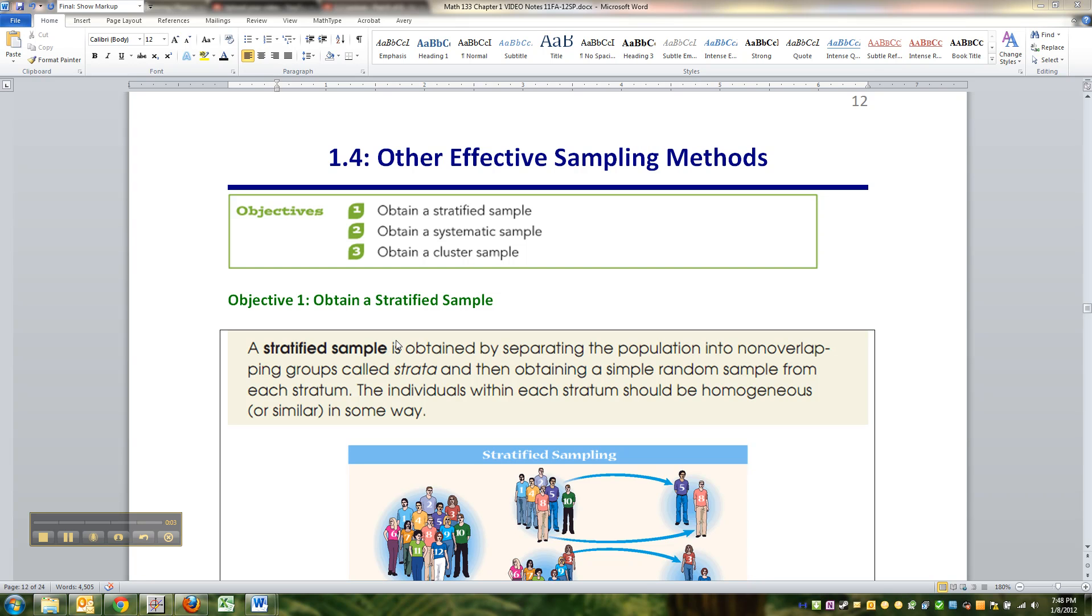So now we move into 1.4, which is the other types of sampling that are available. Simple random sampling is kind of a basic building block, sort of like a Lego block. And there are other types of sampling that we can do besides that, or sometimes in conjunction with simple random sampling.